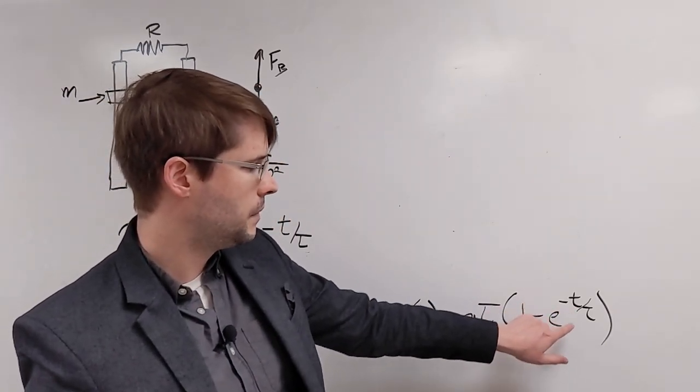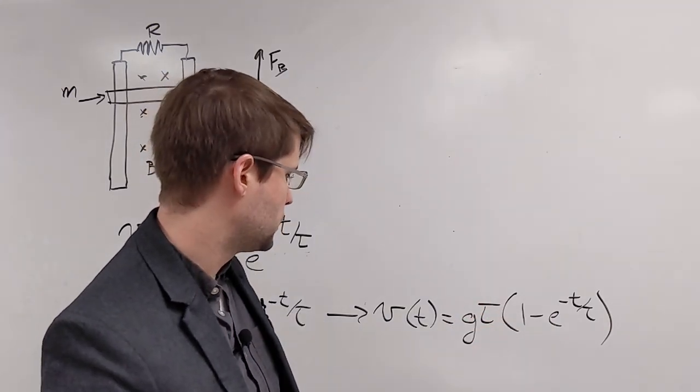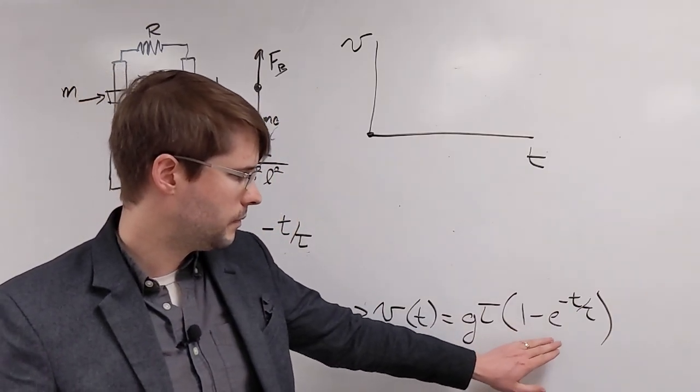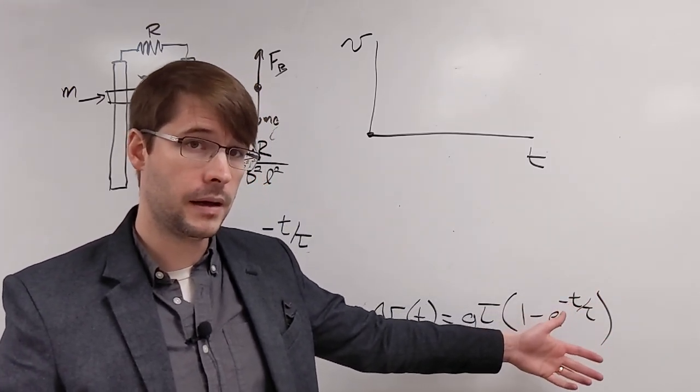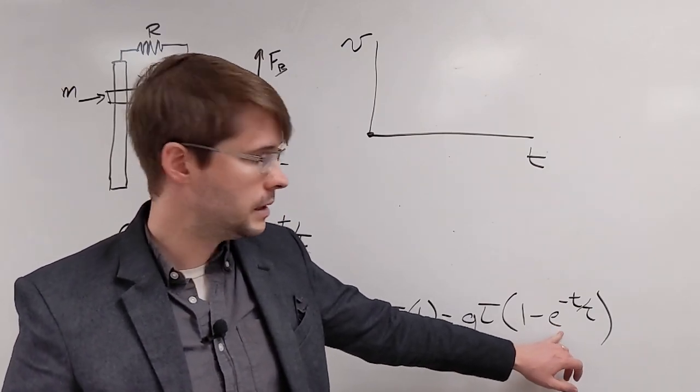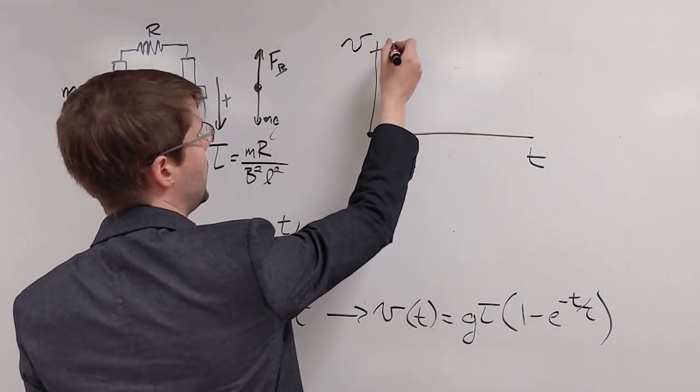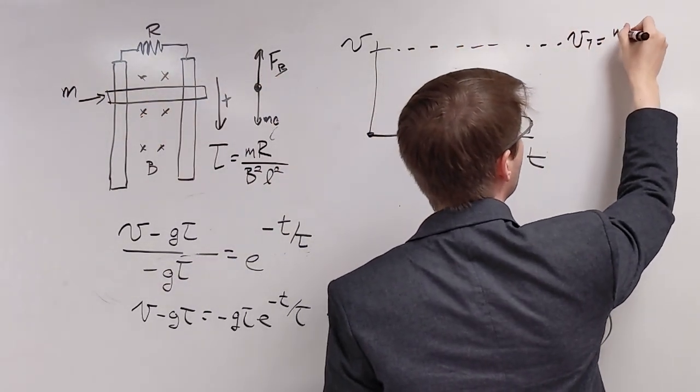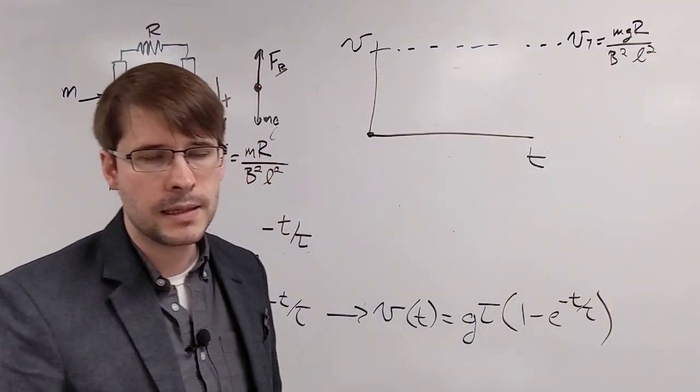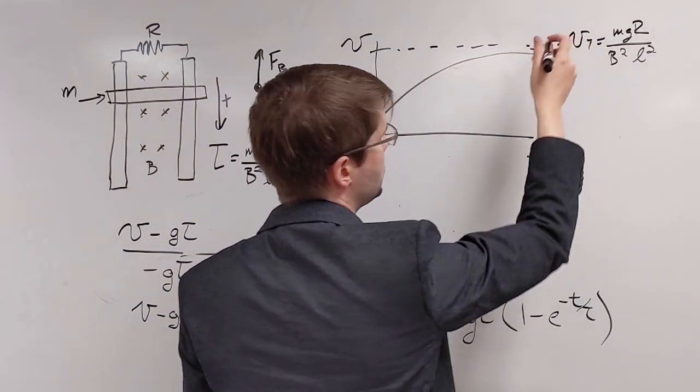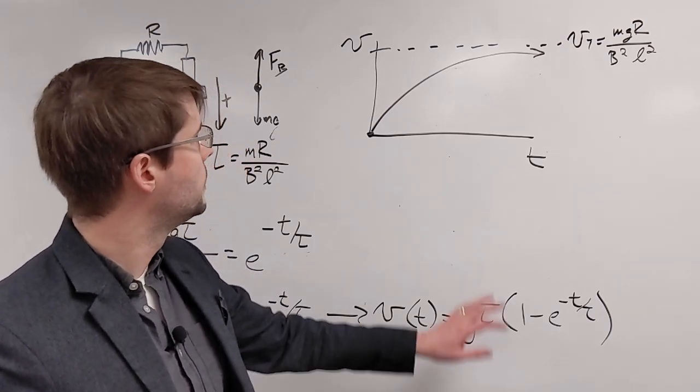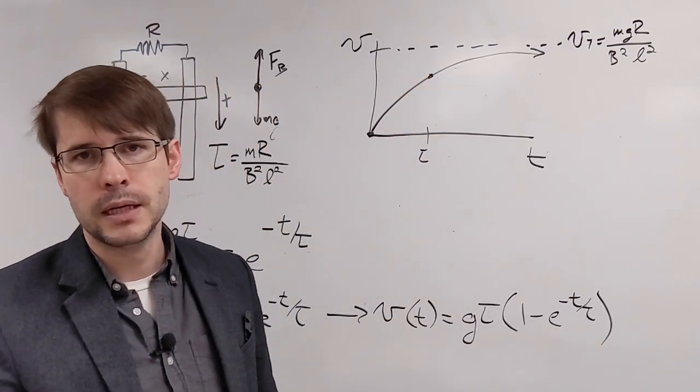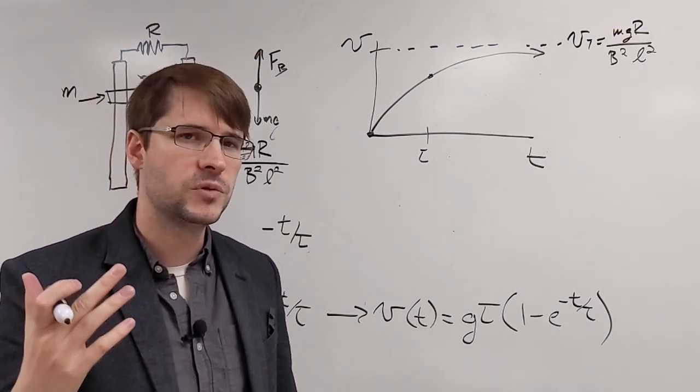So if we plug in 0 for time. We get 1 minus 1 because e to the 0 is 1. So this is equal to 0. And as time goes on, eventually we'll get this to the negative infinity. Which would be dividing by an infinite number. So we get 0 for this term eventually. So when this is 0, it's just equal to g times tau. So that means that the final velocity is going to be equal to g times tau, which is mgr over b squared l squared. Which is our terminal velocity. And in the middle, we get this sort of shape. Something that approaches there. And just like with our time constant before, it approaches after one time constant, it's gone through a certain amount of change. I believe it should be about 63% of its final terminal velocity after that situation.